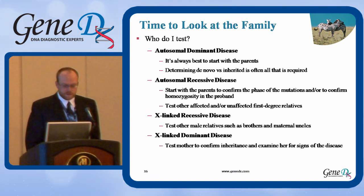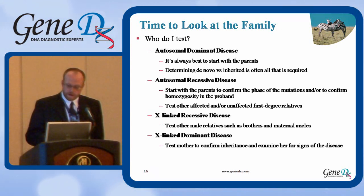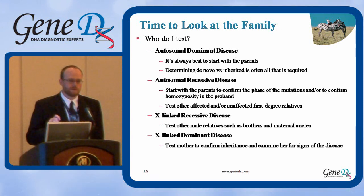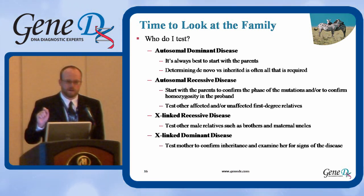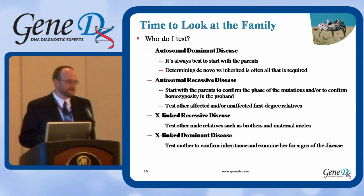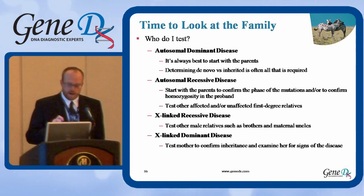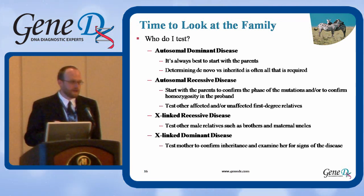For autosomal recessive diseases, you can start with the parents to confirm the phase of the mutations — make sure that they were inherited on separate alleles — or to confirm homozygosity. With traditional sequencing, you can get a homozygous result even when what you actually have is a heterozygous point mutation and a deletion on the other allele. Keep that in mind. And then you can test other affected and unaffected first-degree relatives to see if anyone else has both changes and whether they have features.